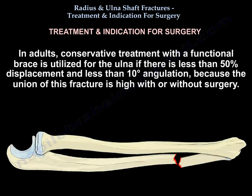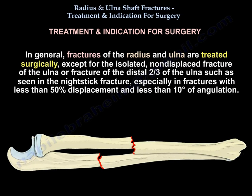In adults, conservative treatment is applied for the ulna if there is less than 50% displacement and less than 10 degrees angulation, because the union rate is high with or without surgery. In general, fractures of the radius and ulna are treated surgically, except for the isolated non-displaced fracture of the ulna or fracture of the distal two-thirds of the ulna — such as seen in nightstick fracture — especially with less than 50% displacement and less than 10 degrees angulation.